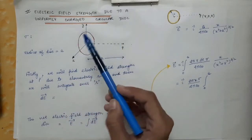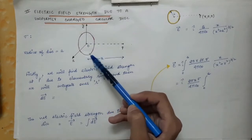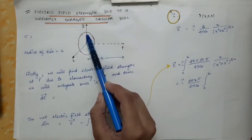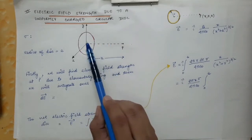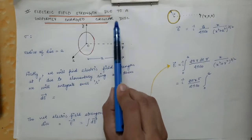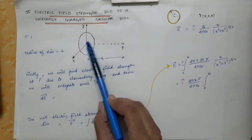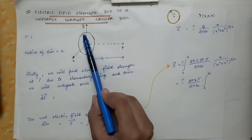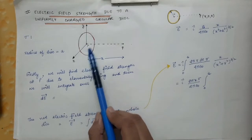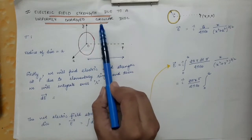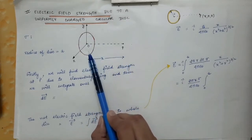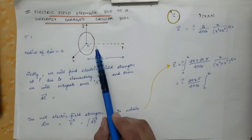Instead of a loop, we will have a whole disk which will be charged uniformly. Earlier, the charge was only on the circumference because we were considering the circular loop — there is no charge present inside. But here, we are considering a circular disk, meaning there is charge present inside the disk as well. The charge is present on the circumference as well as on the surface within the circumference, and this makes up the circular disk.